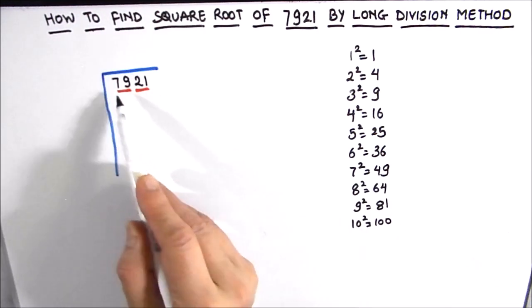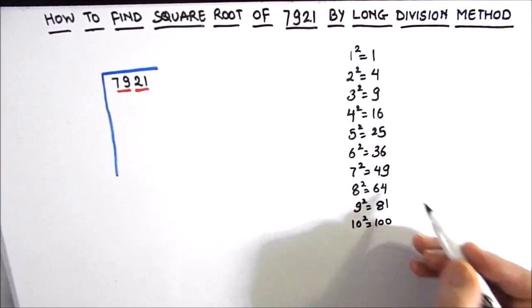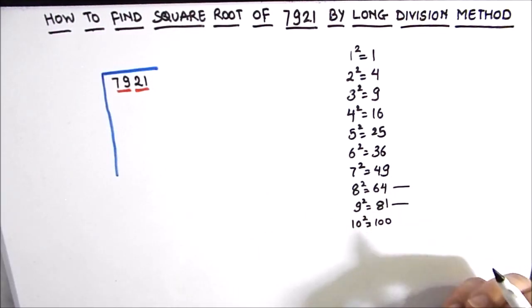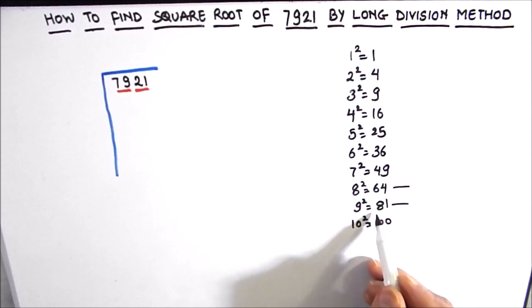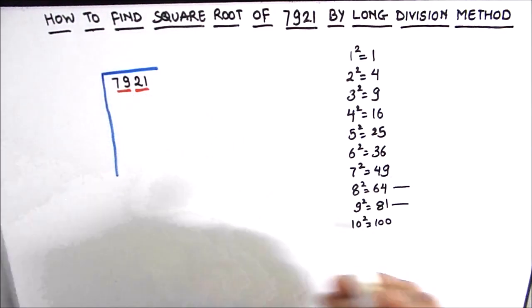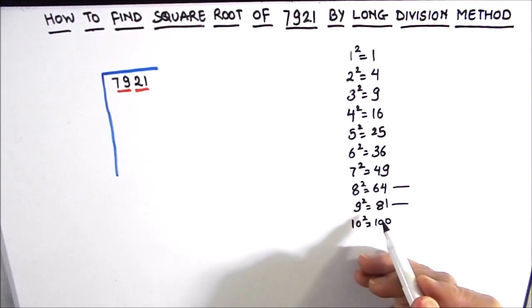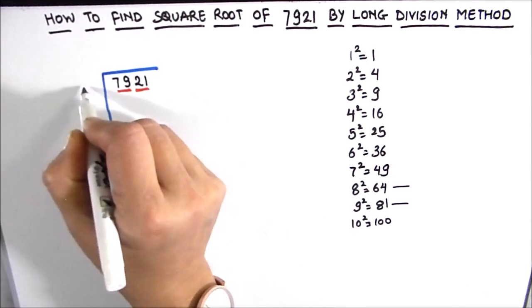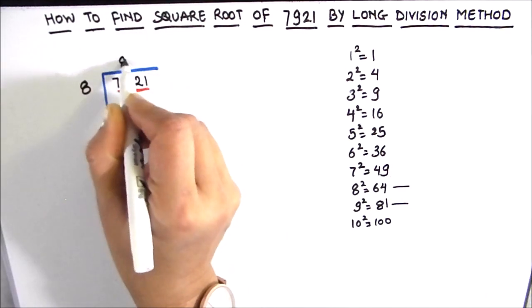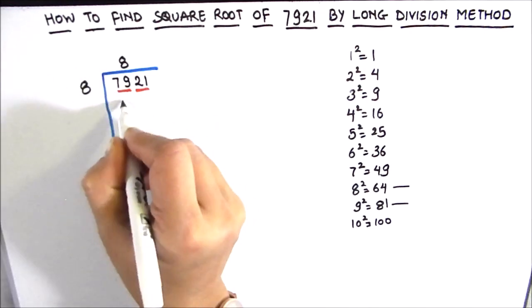We see that our first group, 79, lies between 8² and 9². Since 9²=81 is bigger than 79, we take 8 as our number. So our divisor will be 8 and our quotient will be 8. Eight times eight is sixty-four.